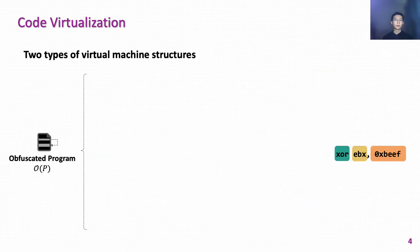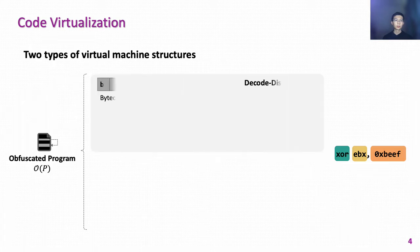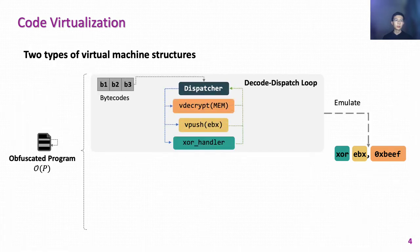At runtime, the obfuscated program will use the process-level virtual machine to emulate the semantics of the original instruction. There are mainly two types of virtual machine structures. The traditional interpreter uses a central loop to fetch the bytecode and schedule corresponding handlers. Each virtual handler will return to the same dispatcher. This loop structure is a conspicuous pattern that can be easily recognized by analysts.